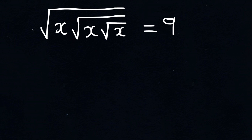Here's another example where we are required to find the value of x. As you can see from our expression, the x's are within nested square roots. The first thing you want to do is work from the innermost square root going outward. We know that the square root of x is the same as x raised to the power of half. So we start by simplifying the innermost square root.